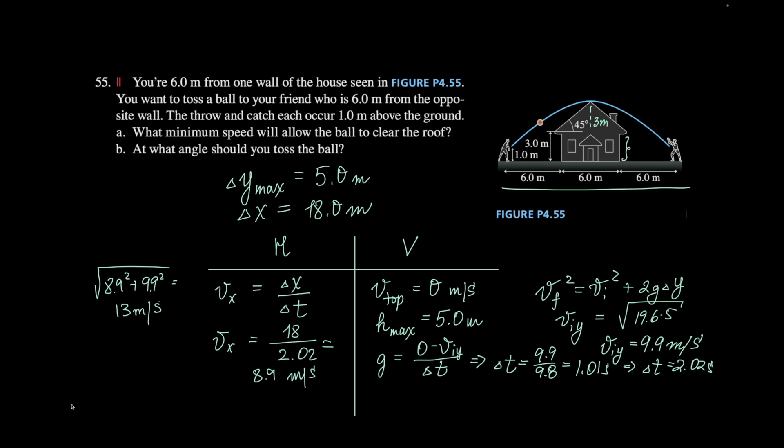So 13 meters per second is your minimum speed. And at what angle? That will be tan of y over x. So that's 9.9 over 8.9.